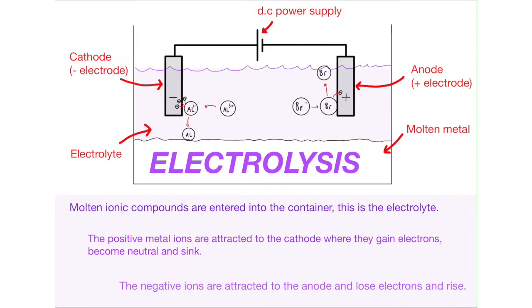And finally, electrolysis. Electrolysis is an example of another separation method that uses electricity to split up compounds. It can also be used to separate metals from ores to extract them.